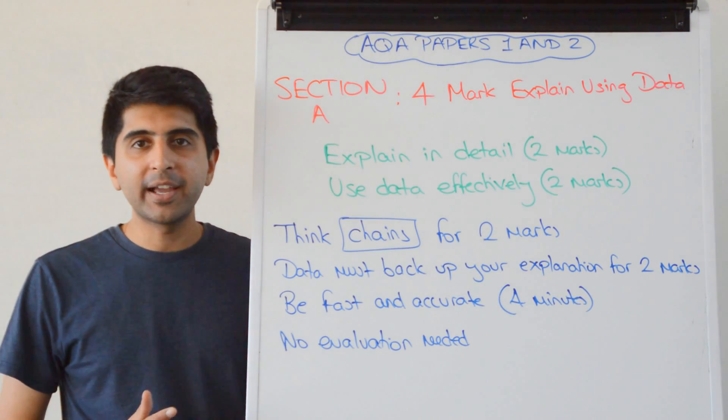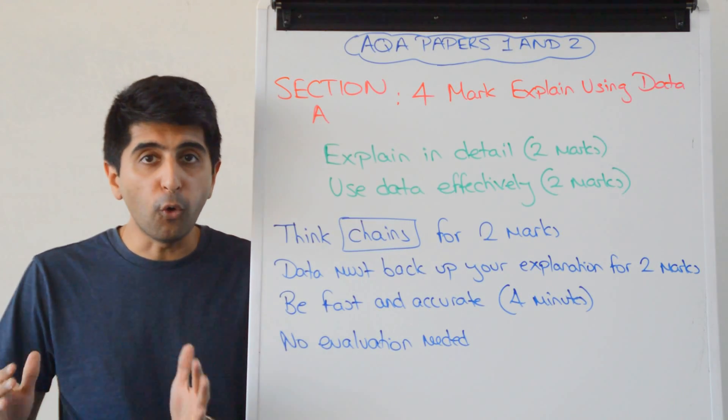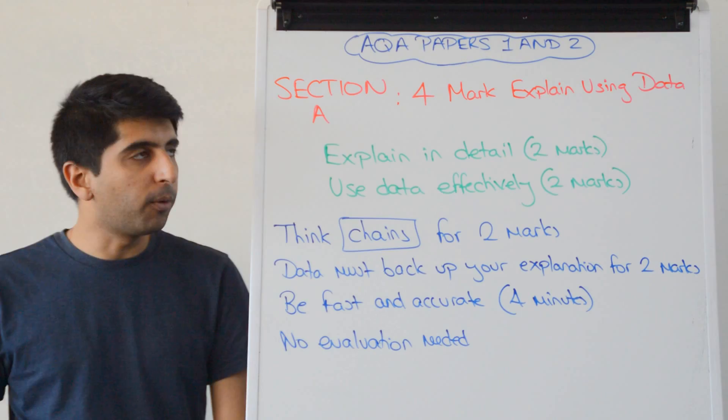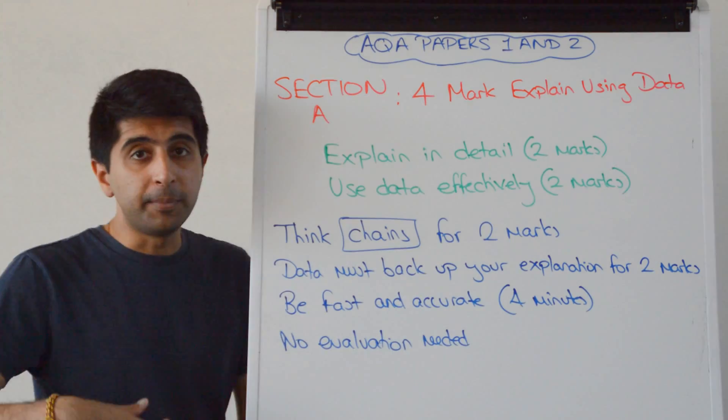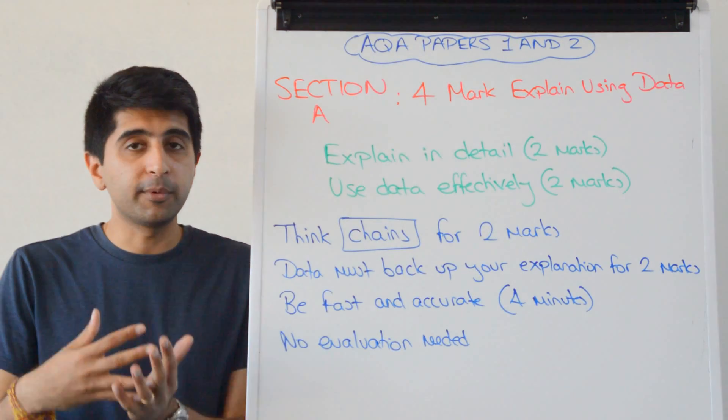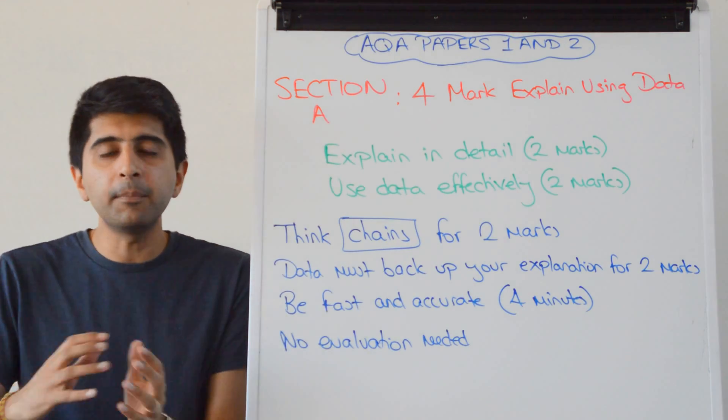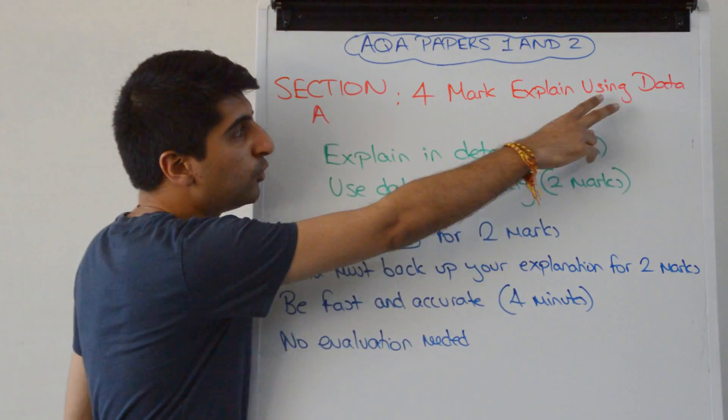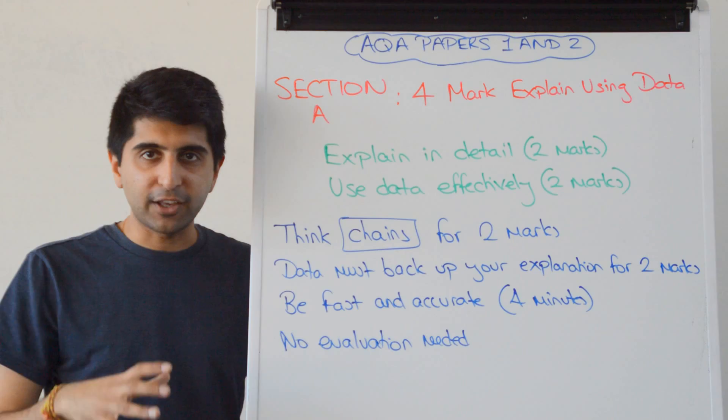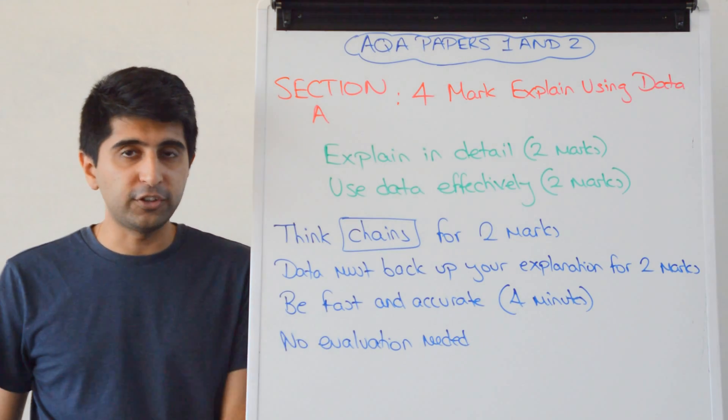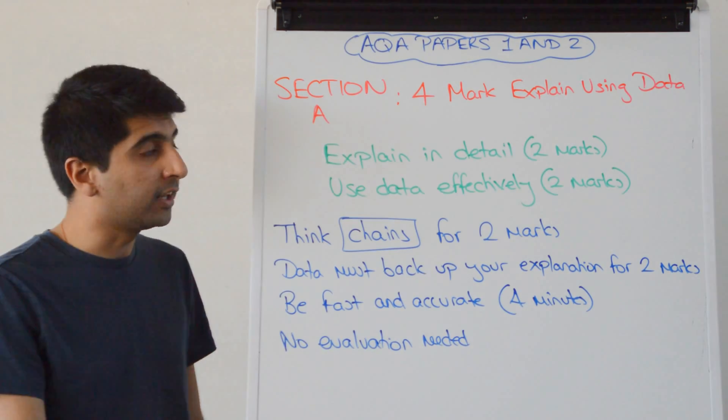Hi everybody. After your two-marker in Section A, whether it's Paper 1 or Paper 2, you'll have this four-marker to do. That four-marker will be to explain something - maybe an economic theory, maybe the impact of a policy. You have to explain some kind of economic theory using data in the extracts. Now this is a very easy question, one you should be getting four marks on. Here's how.